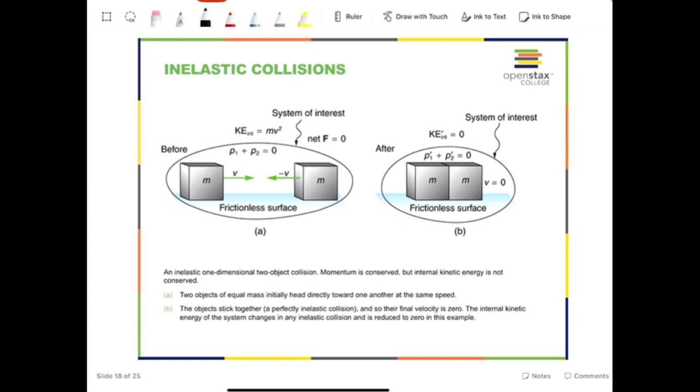An extreme case of inelastic collision is when the two objects stick together after the collision, as shown in figure B. This will cause the loss of mechanical energy to be the maximum. This case is named as the perfectly inelastic collision. It is clear that this type of collision will have the two final velocities that are equal.